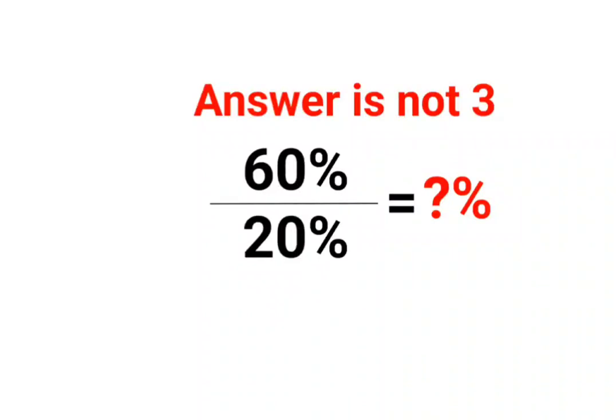Welcome everyone. Today we are going to solve a very nice percentage problem. We need to find out what is 60% divided by 20%. Now a lot of people thought that the answer is 3, but that is not correct.